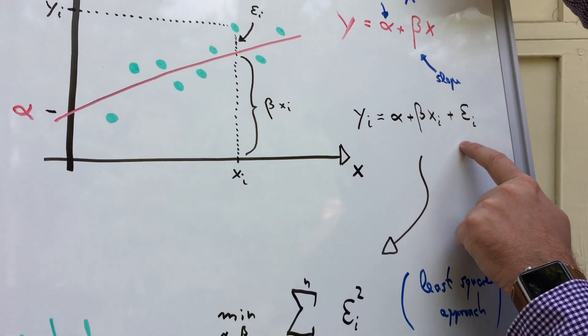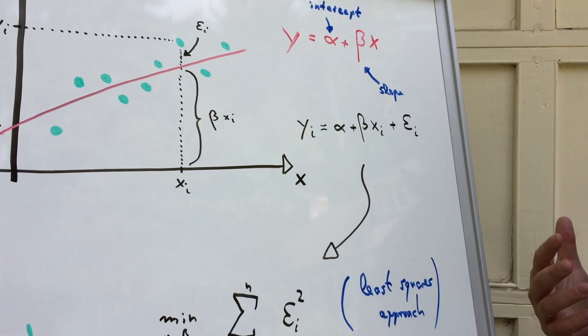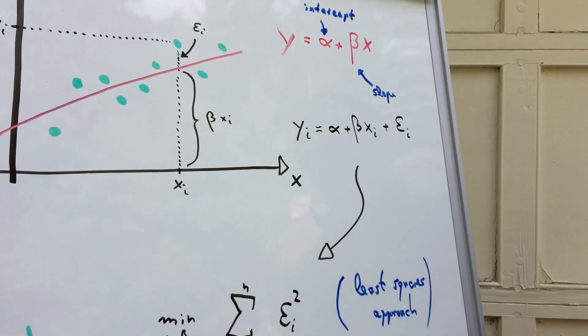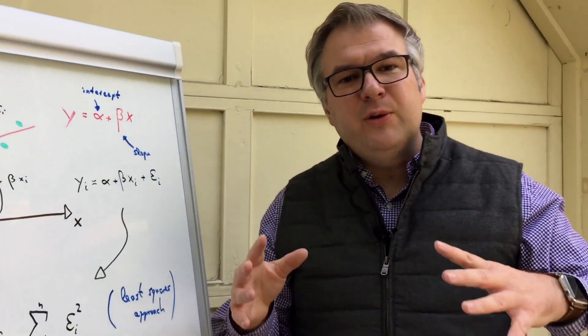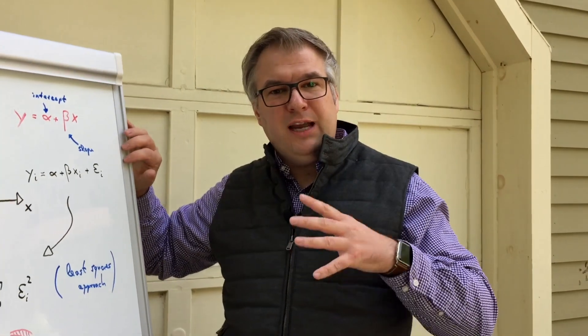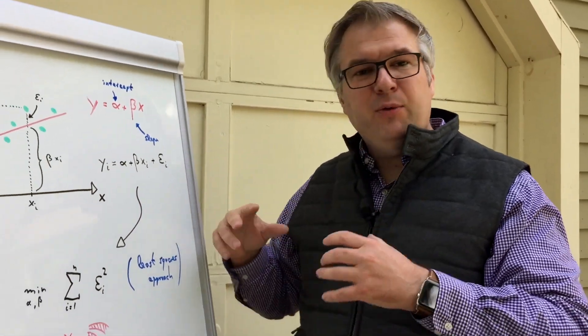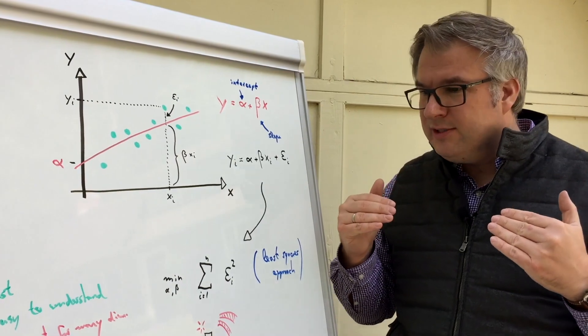But you see this is only an approximation, so it's not perfect. So there is some error you're making. We call this epsilon i. So you need to sum this up as well. Those error terms, they are also called residuals. In fact, we want to minimize the sum of all of them. We want to be good for all the data points.